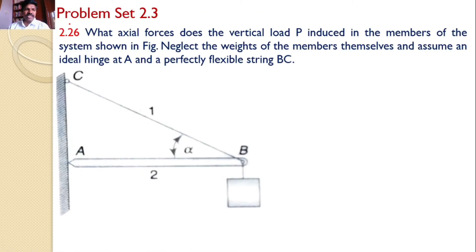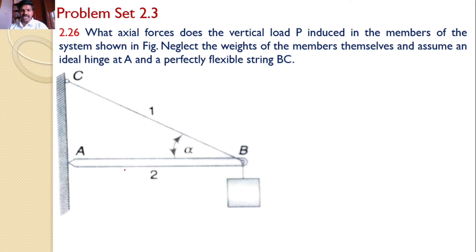In this tutorial we will discuss problem set 2.3, problem number 2.26. What axial forces does the vertical load P induce in the members of the system shown in the figure? Neglect the weights of the members themselves and assume an ideal hinge at A and a perfectly flexible string BC. That means the weight P is supported by the string BC and bar AB. The total system is under equilibrium, and our interest is to find the forces developed inside these two members.